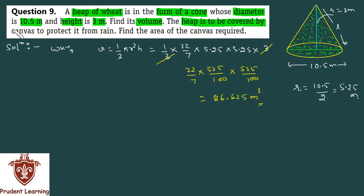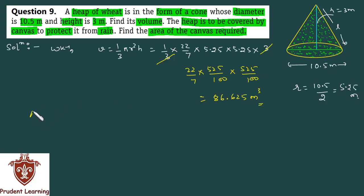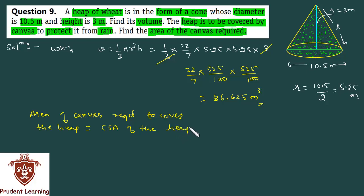Next, the problem says: the heap is to be covered by canvas — to protect it from rain, so the wheat doesn't get damaged. You need to find the area of canvas required. The area of canvas required to cover the heap is equal to the curved surface area of the cone. The canvas area equals the curved surface area.